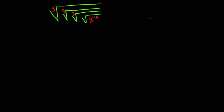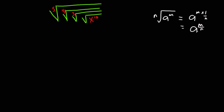In this video we are going to simplify a problem which is a mixture of different roots. To do this we are going to apply one of the properties of indices, which states that the nth root of a exponent m is the same as a exponent m times one over n, which is the same as a exponent m divided by n. I'm going to apply this property to simplify this problem.